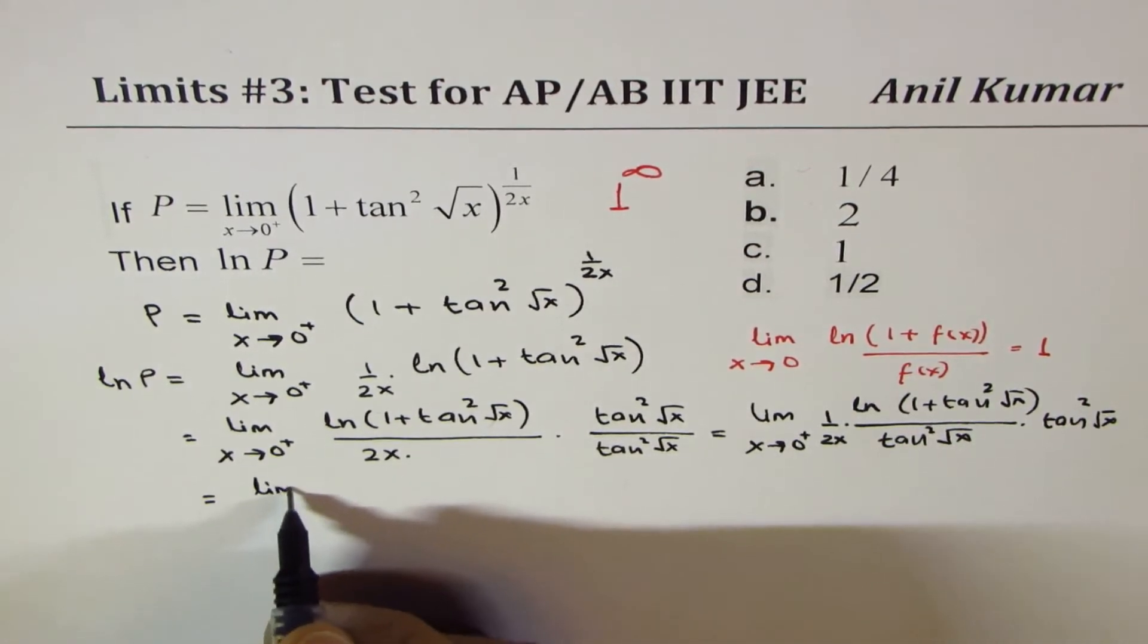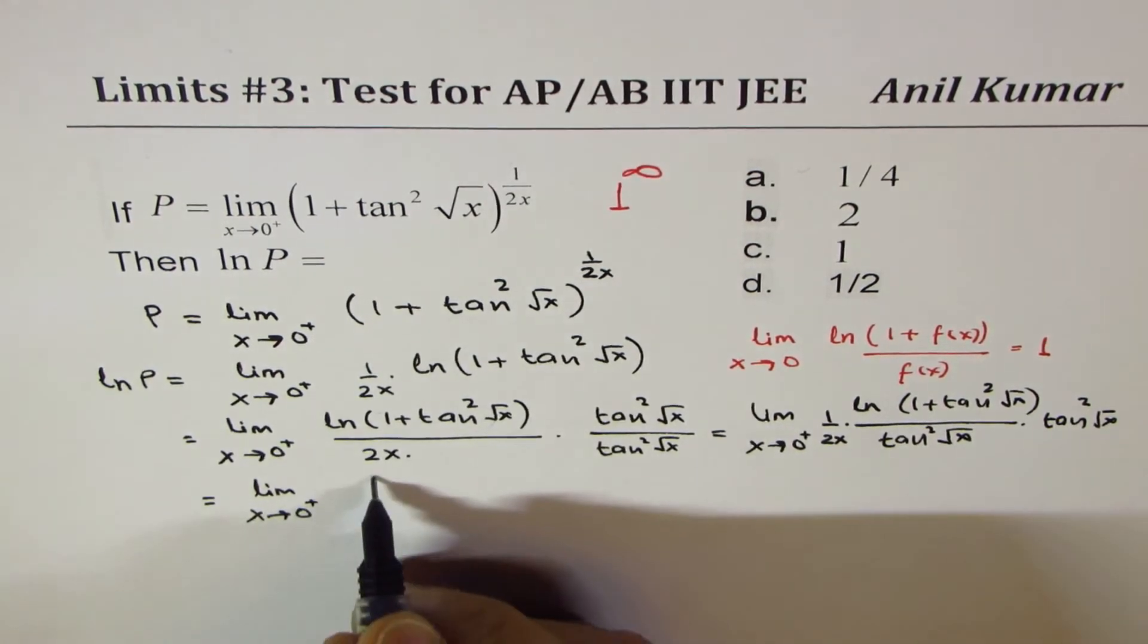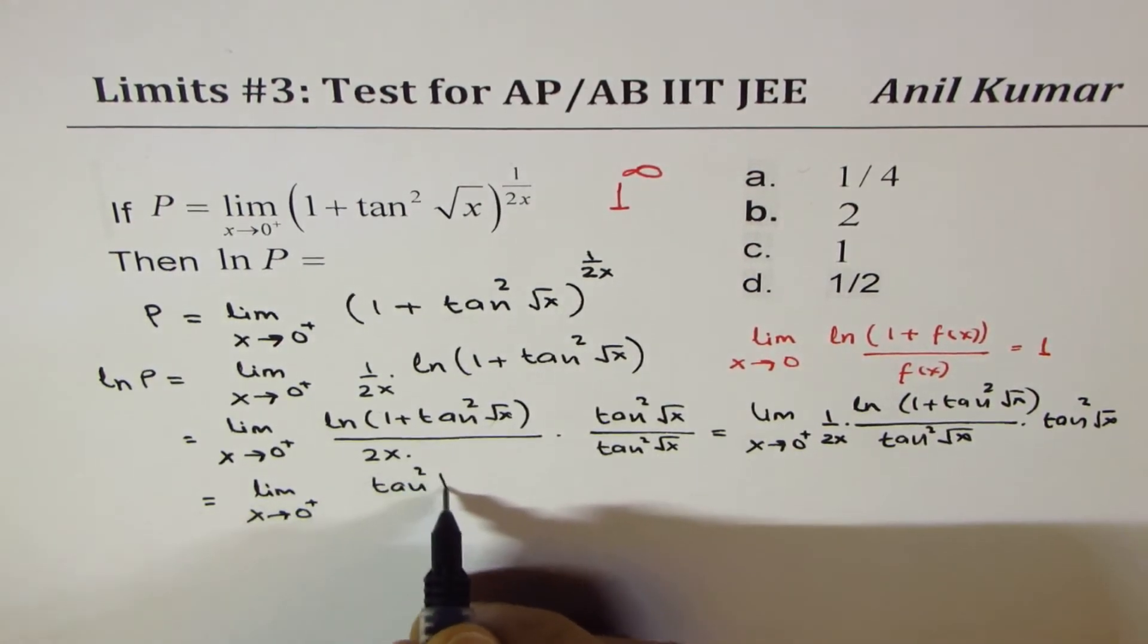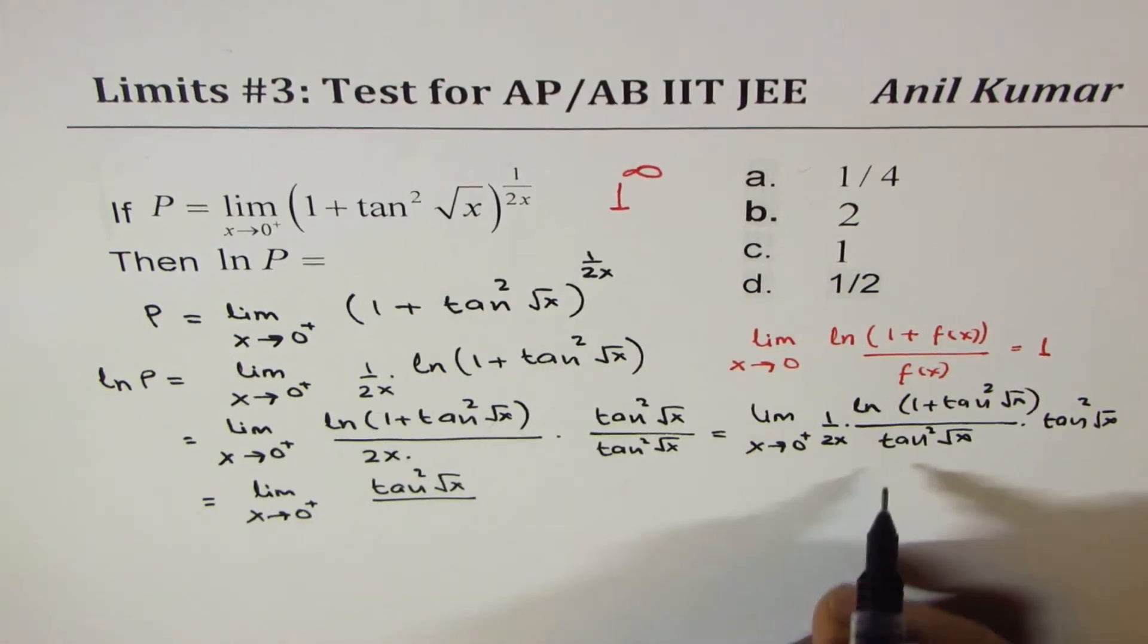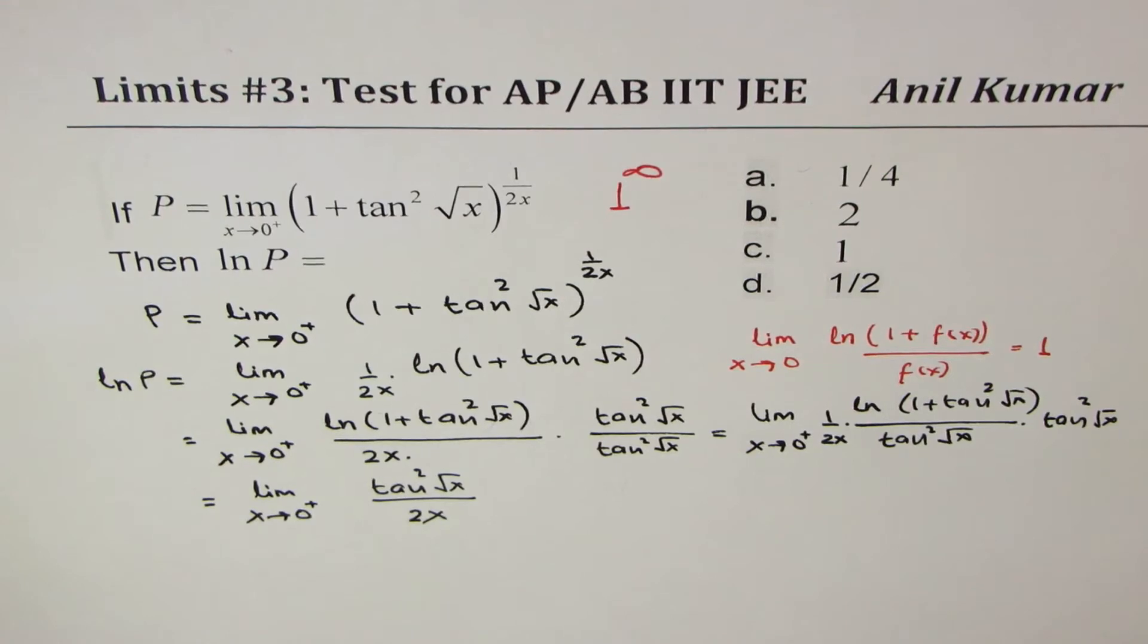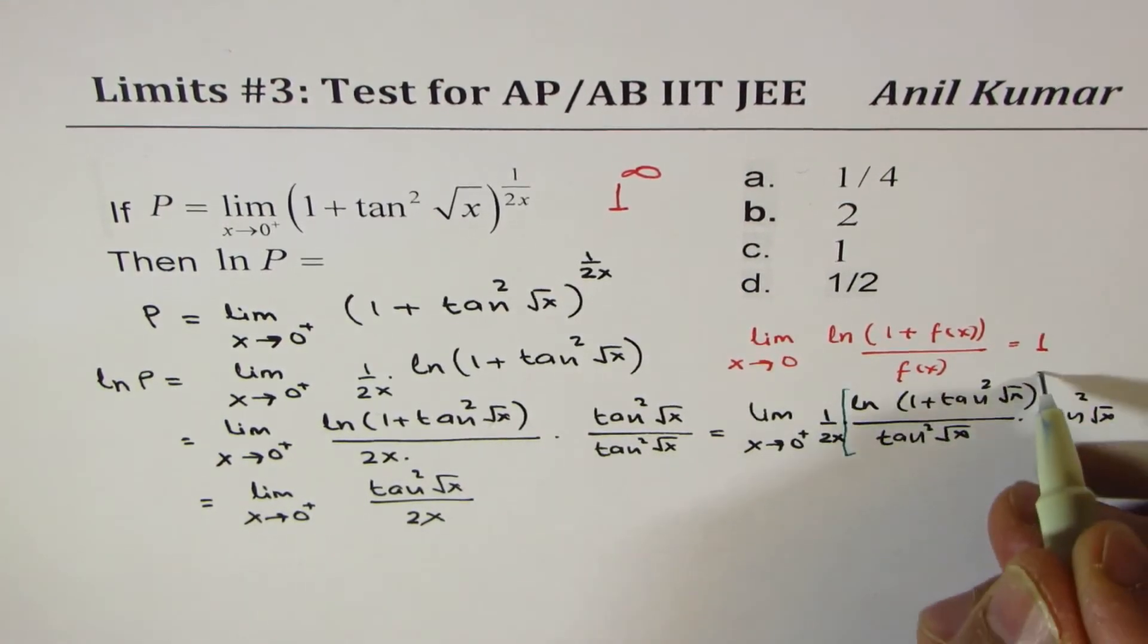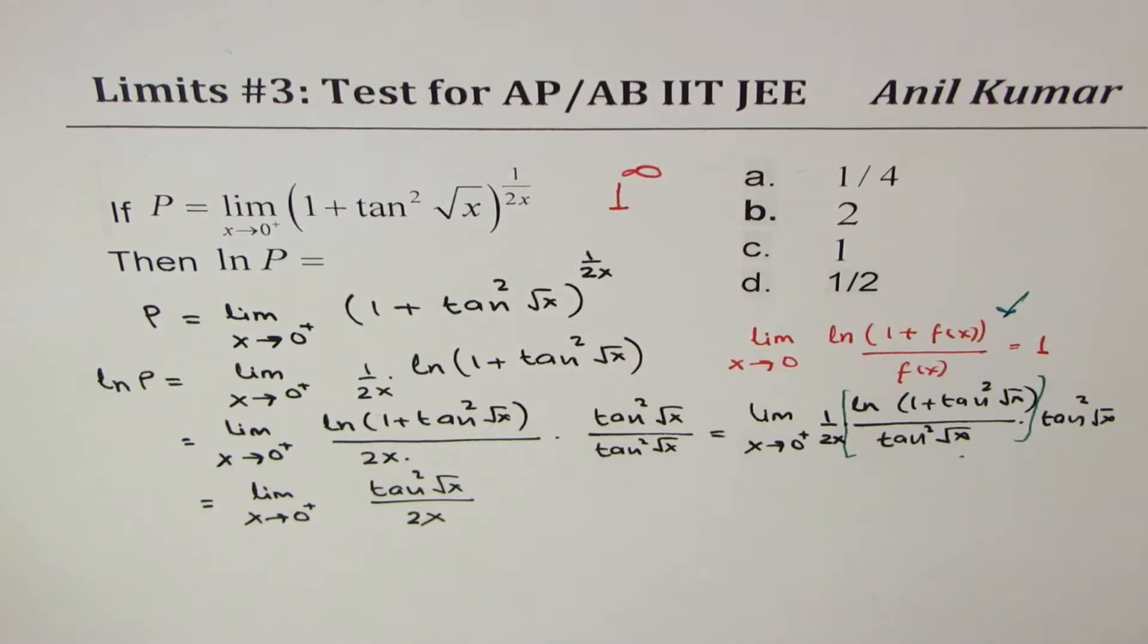So this part is 1 for us, so we could write this as limit x approaches 0 from the right side, and we are left with tan²√x over 2x. Since limit of this portion is 1 using that formula.